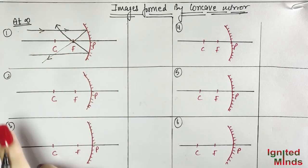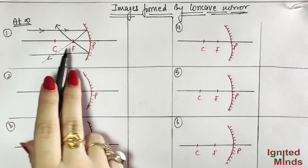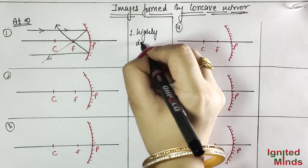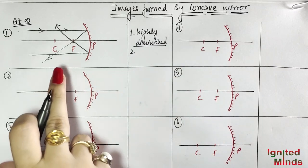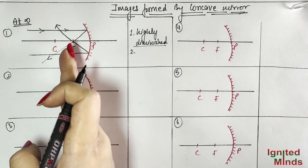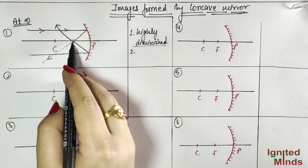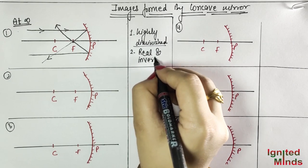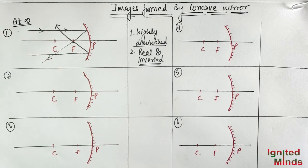Now, what are the details of this image? When the object is at infinity, the image will be: first, highly diminished — point sized, very small. Second, it is on the reflecting side of the mirror, so what will it be? Real. And inverted. Inverted means the image of the object appears upside down. This is the first case.